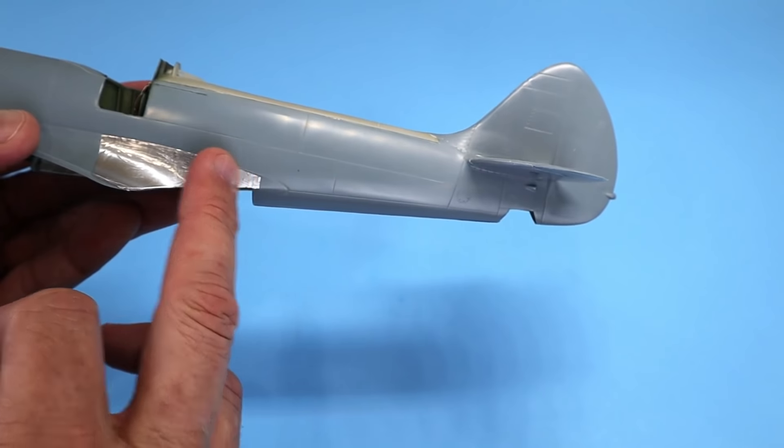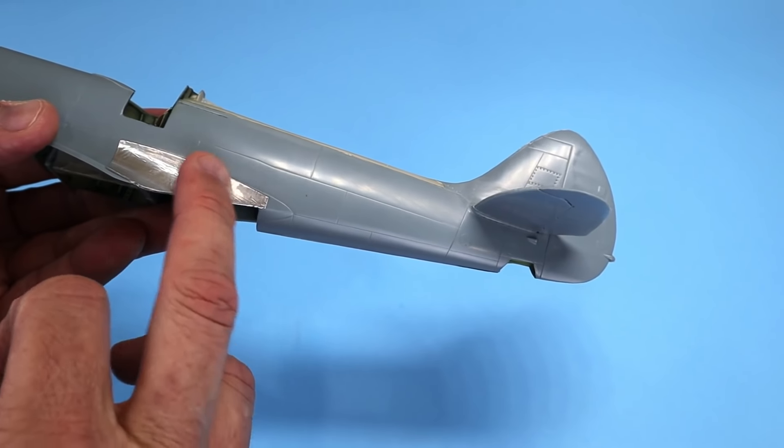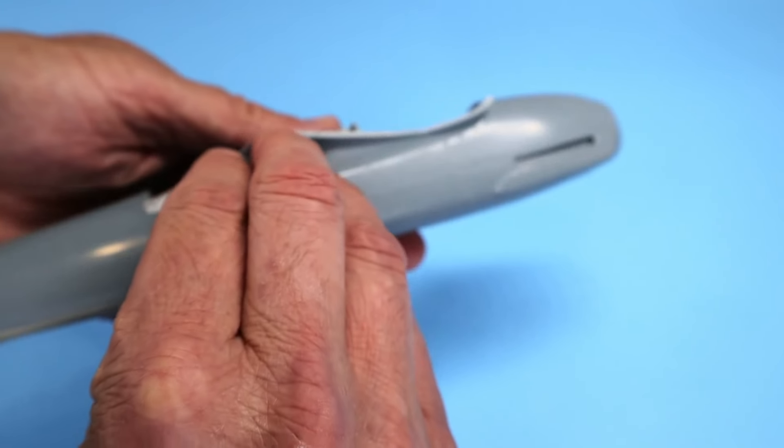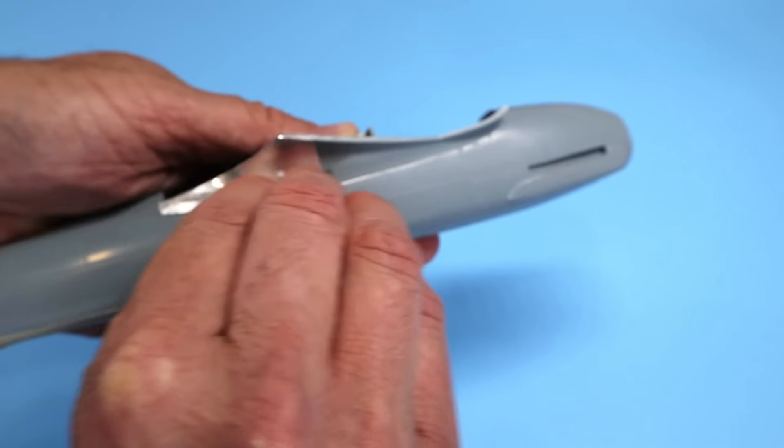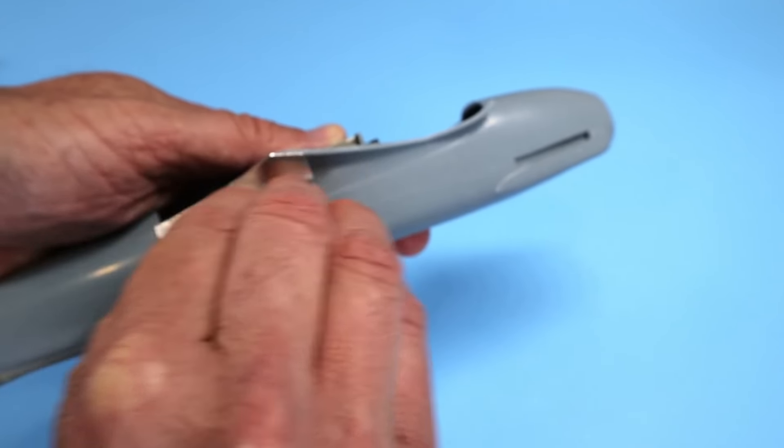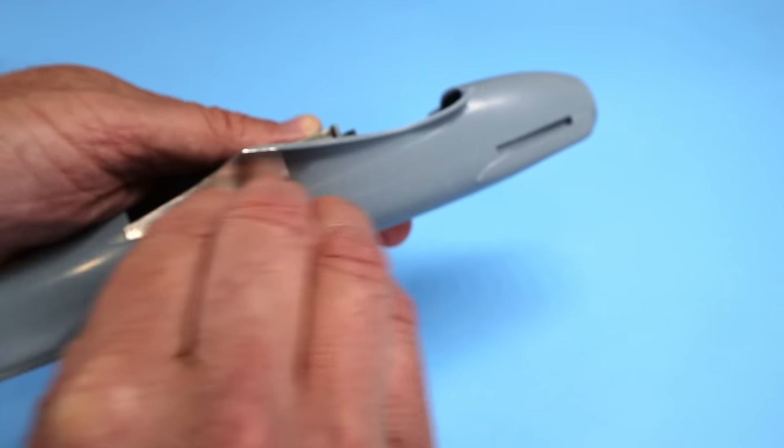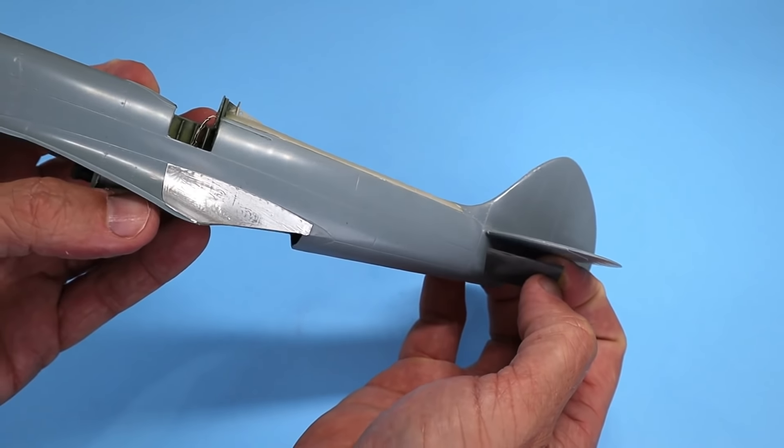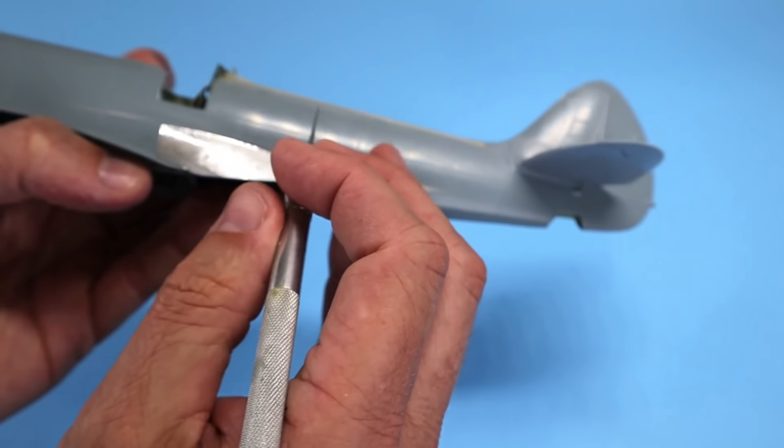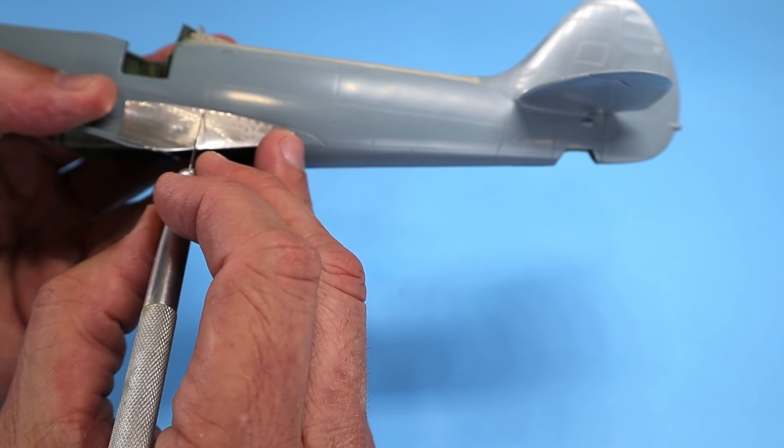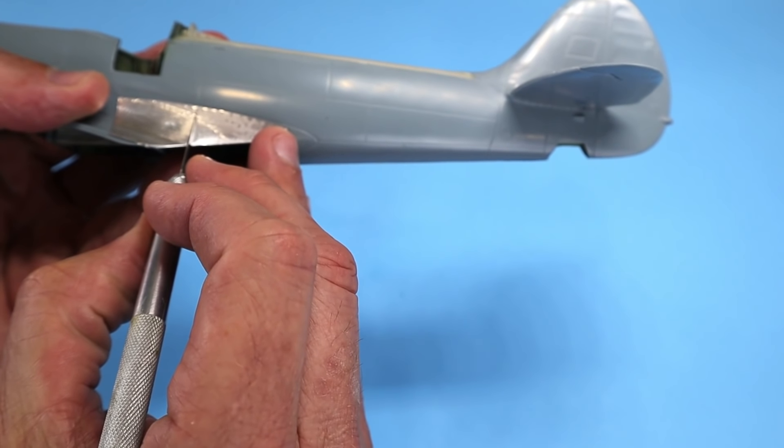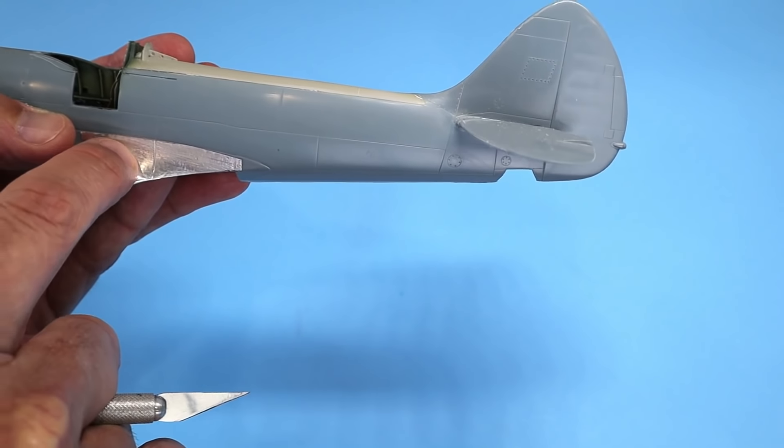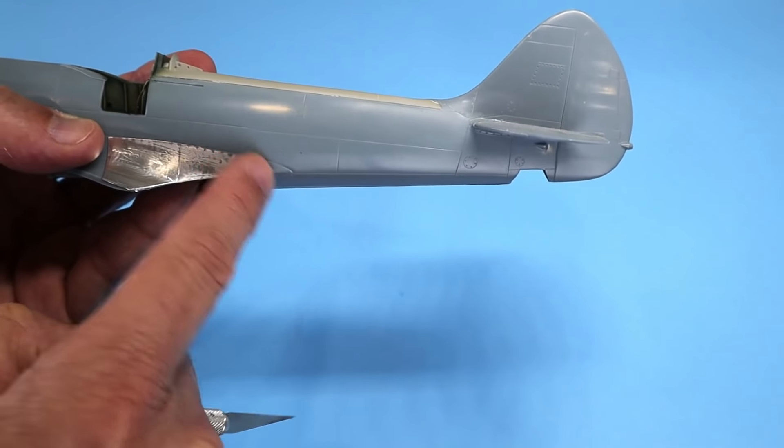So after you've got the aluminum down, you can come back in and add various effects. I'll take a piece of fine sandpaper—1000 grit or higher—you can just come back in and sand it. You can see here kind of the overall effect that it's creating. What you can also do is you can scribe panel lines into the foil directly like so, just following over existing panel line detail or creating your own.